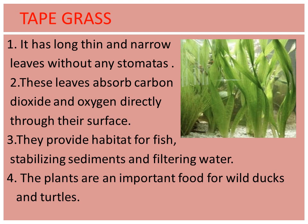Tape grass: it has long, thin, and narrow leaves without any stomata. These leaves absorb carbon dioxide and oxygen directly through their surface. They provide habitat for fish, stabilizing sediments and filtering water. The plants are an important food for wild ducks and turtles.